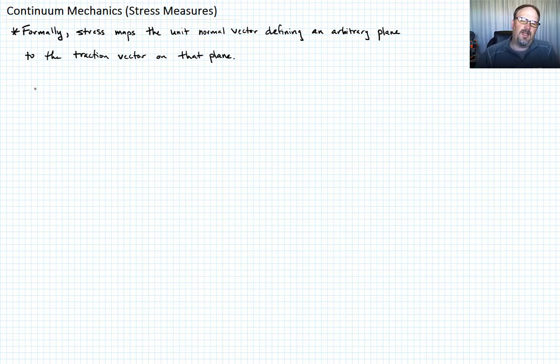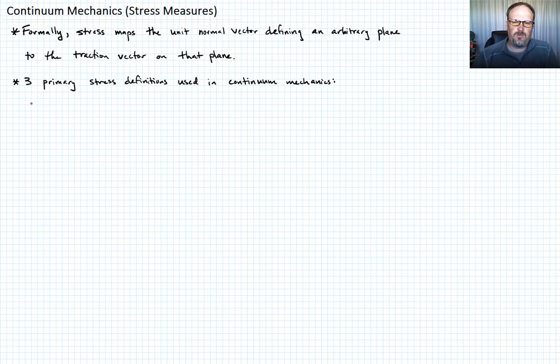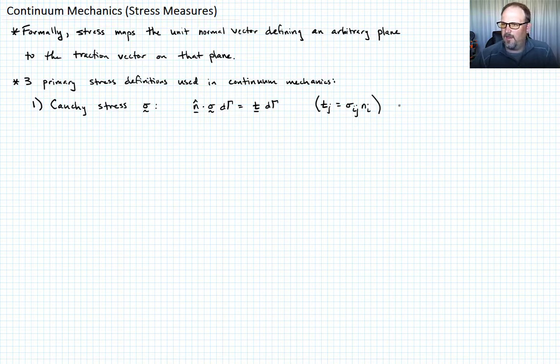So that's what the stress tensor does. And in continuum mechanics, we have three primary definitions of stress that we're going to use. The first one is the Cauchy stress, which we typically denote as sigma. And what does the Cauchy stress do? It takes n, the unit vector defining a plane normal, times the Cauchy stress tensor, times some differential area of that plane, and it maps it to the traction vector t, also times the differential area. So if you'll note, this in direct form reminds you of the Cauchy stress formula that you probably remember from your undergraduate, right? Tj equals sigma_ij n_i. Call that equation one.